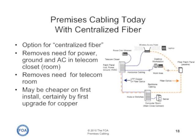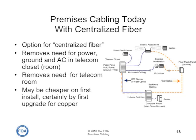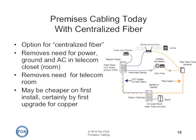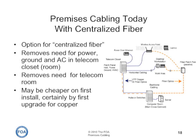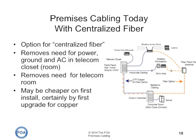Another option today is to go to centralized optical fiber. If we use fiber not just for the backbone but for the connection to either a desktop or a wireless access point, we need no electronics between the data center and the end device. We've even seen the development of centralized fiber networks based on fiber-to-the-home technology, called passive optical LANs, that offer gigabit and above speeds with ease using pre-terminated, prefabricated systems for installation.